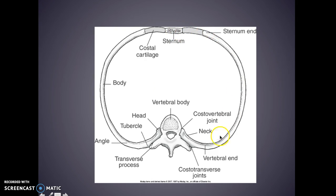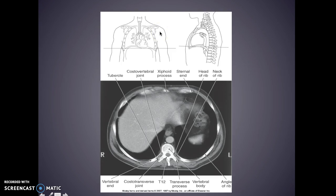Coming around, here's your vertebral end of your rib with your neck and your costovertebral joint, and you have your costotransverse joint — so transverse and vertebral next to the body. You have the head and the tubercle, the angle, the body, and then your costal cartilage.